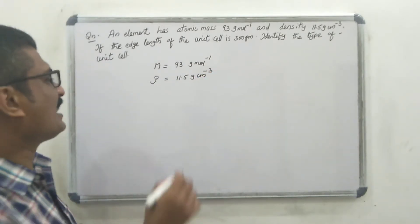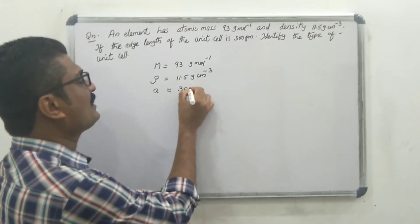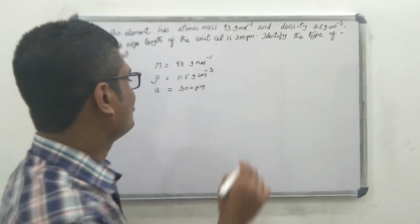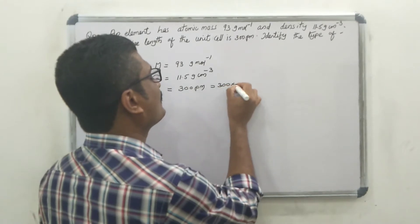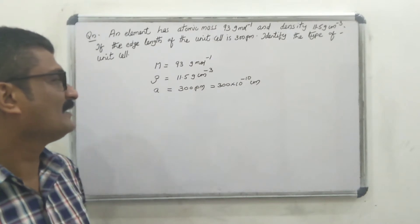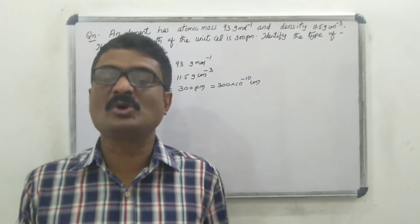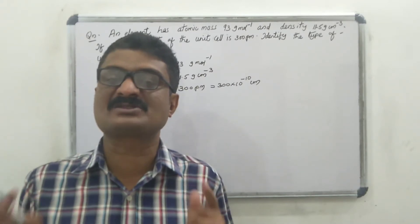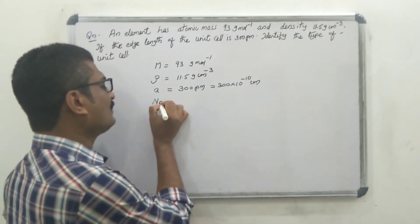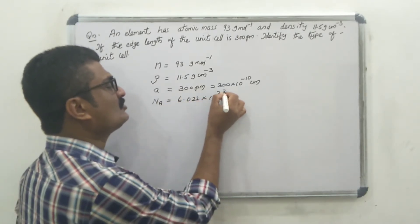The edge length A of the unit cell is 300 picometer. 300 picometer means 300 into 10 raised to minus 10 centimeter, since 1 picometer equals 10 raised to minus 12 meter, which means 10 raised to minus 10 centimeter. The Avogadro number is 6.022 into 10 raised to 23.